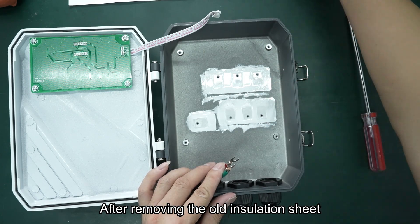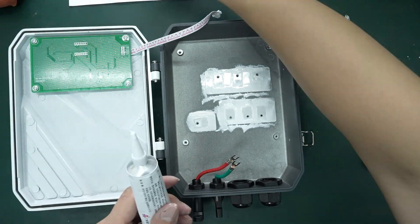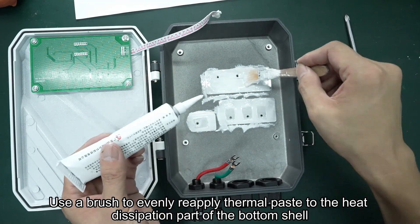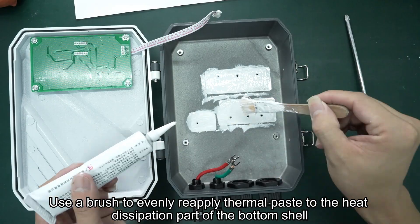After removing the old insulation sheet, use a brush to evenly reapply thermal paste to the heat dissipation part of the bottom shell.